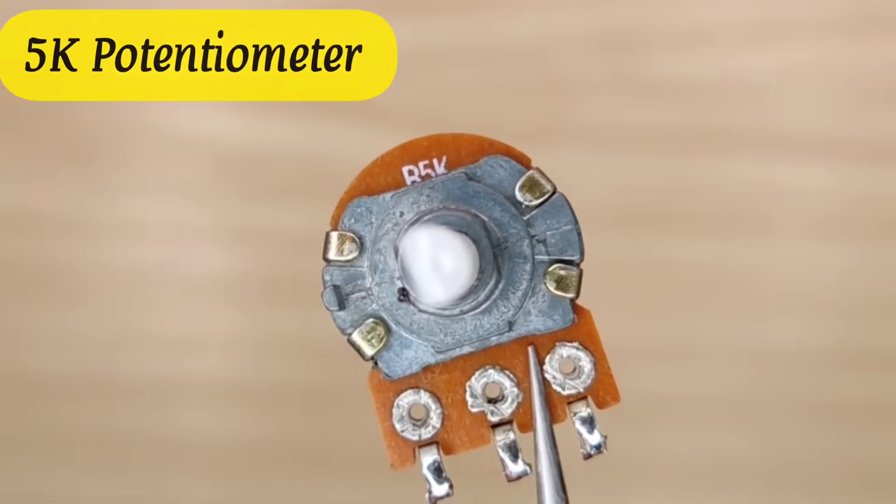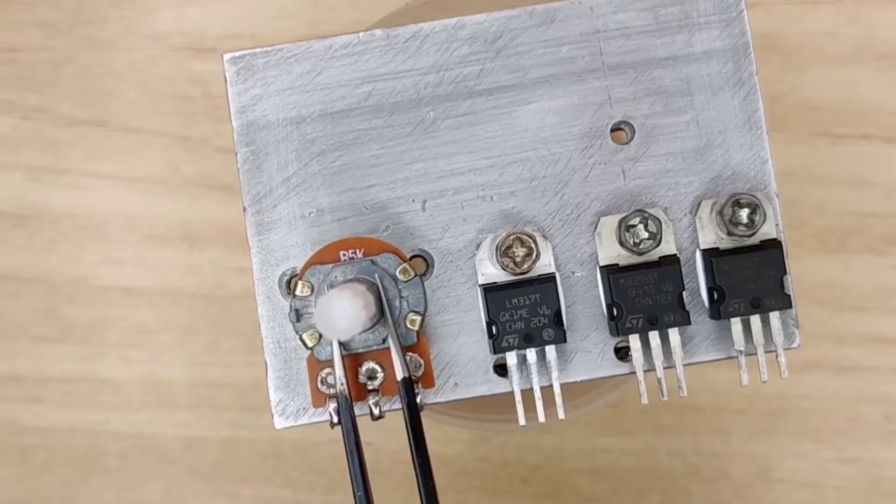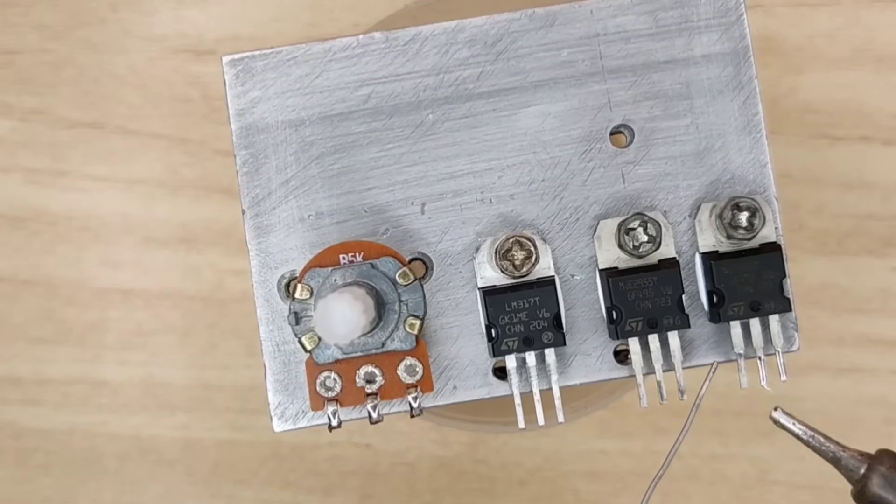Use a 5 kilo-ohm potentiometer for adjusting the voltage output. Pre-solder all the pins of all components.